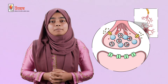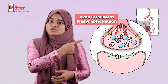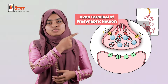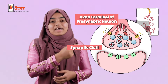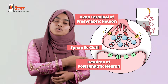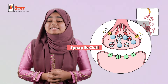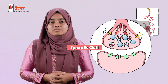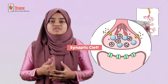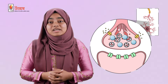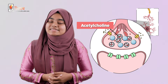Now let's zoom into a part of the synapse. This is an axon terminal of the presynaptic neuron. This is the synaptic cleft and this is the dendron of the postsynaptic neuron. As you can see, the synaptic cleft is nothing but a gap. So action potential cannot directly pass through this gap. Rather, it will take help of a chemical substance — that is acetylcholine.